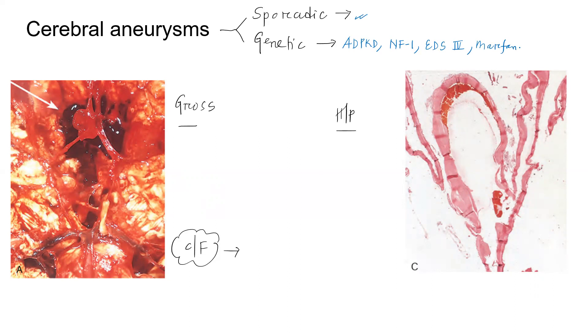Grossly, the saccular or berry aneurysms are 2 to 3 cm in diameter and they have a red, shiny, translucent wall.